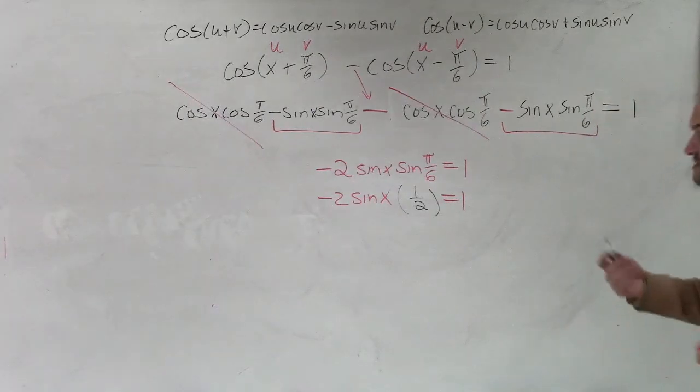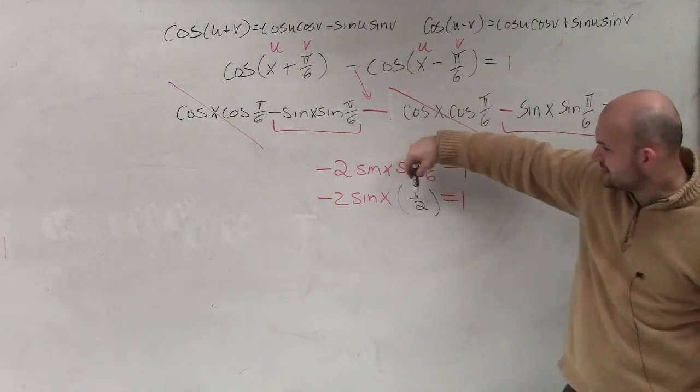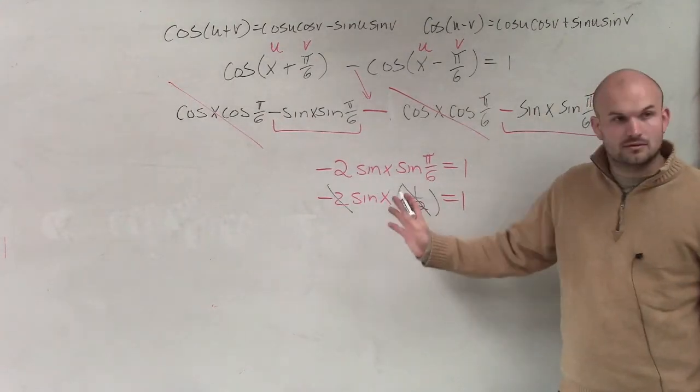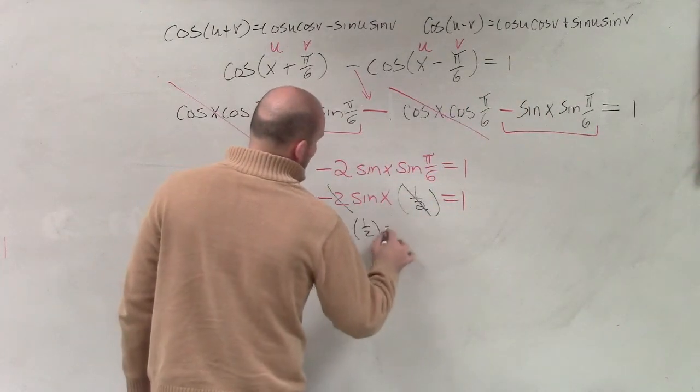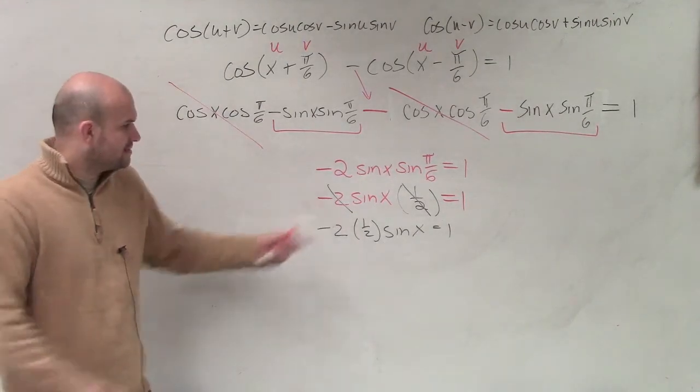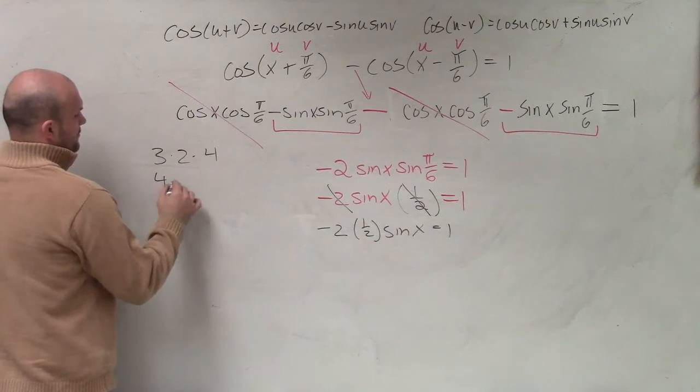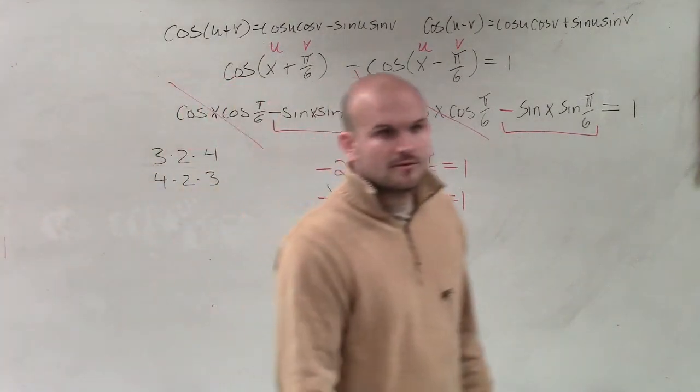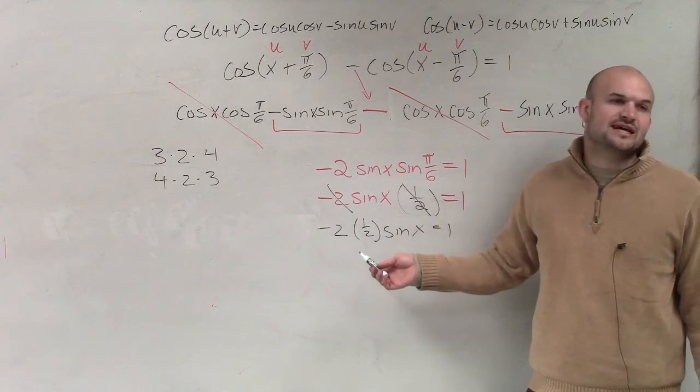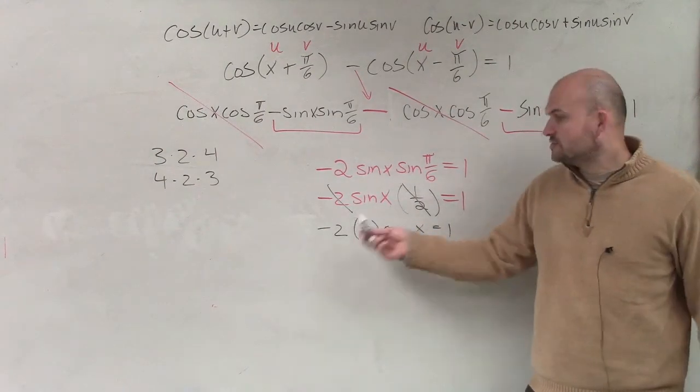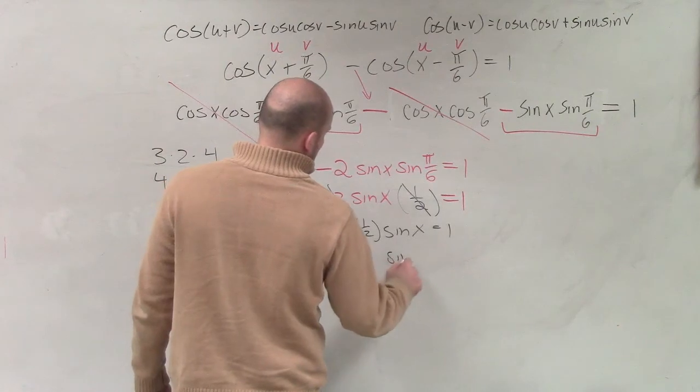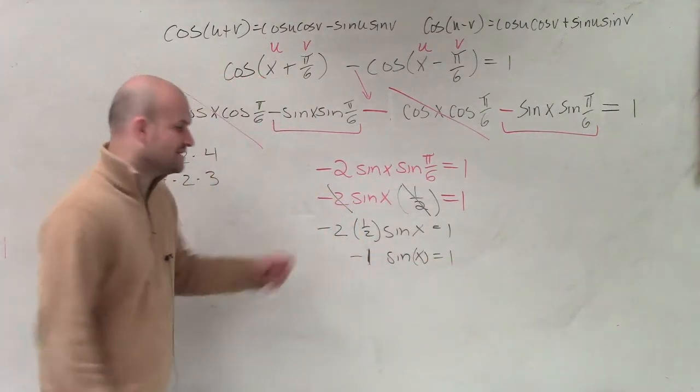So now, when we look at this, is now we can simplify this. But before we go on further, we know that this isn't inside the function anymore. So now, those multiply, right? I can just rewrite this: negative 2 times 1 half times sine of x equals 1. Maybe that might help you see it better. What's 2 times 1 half? 1. What's 3 times 1 third? 1. 4 times 1 fourth? 1. 2 times 1 half? 1. But it's going to be negative 1 now.